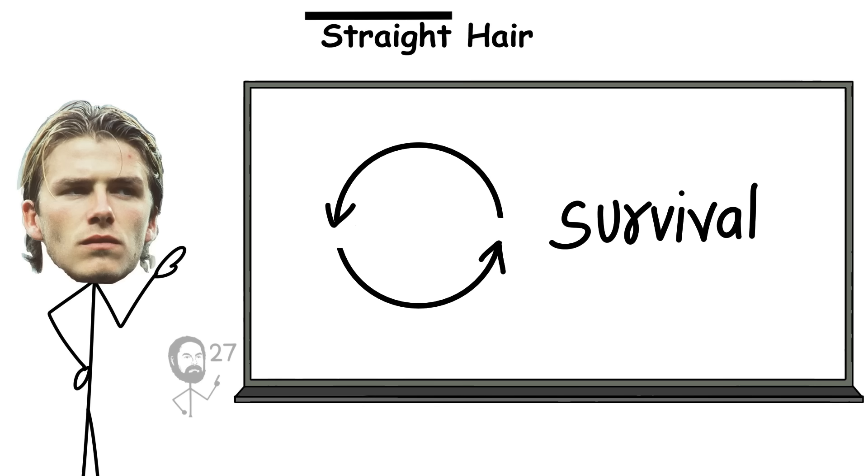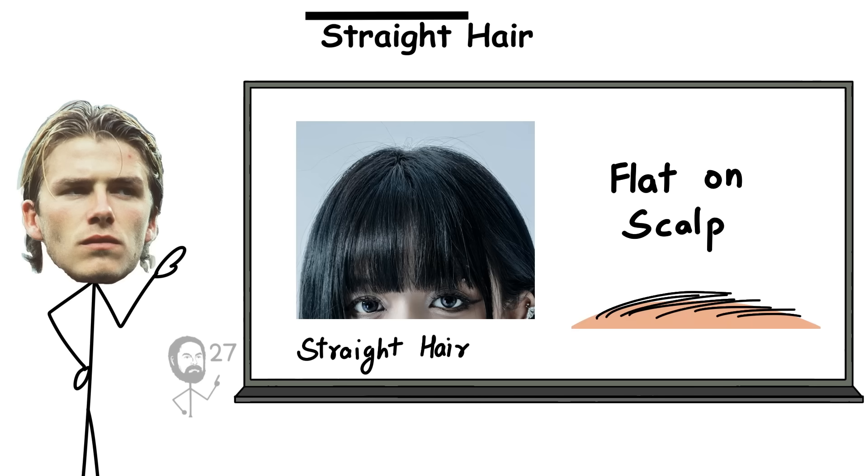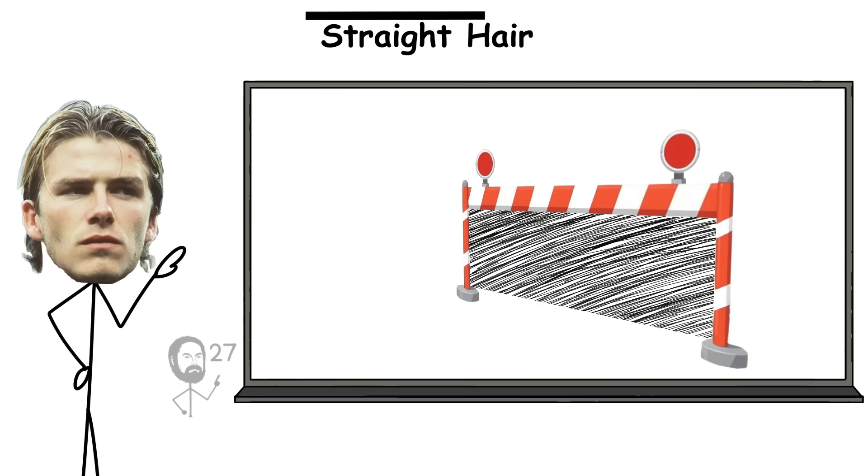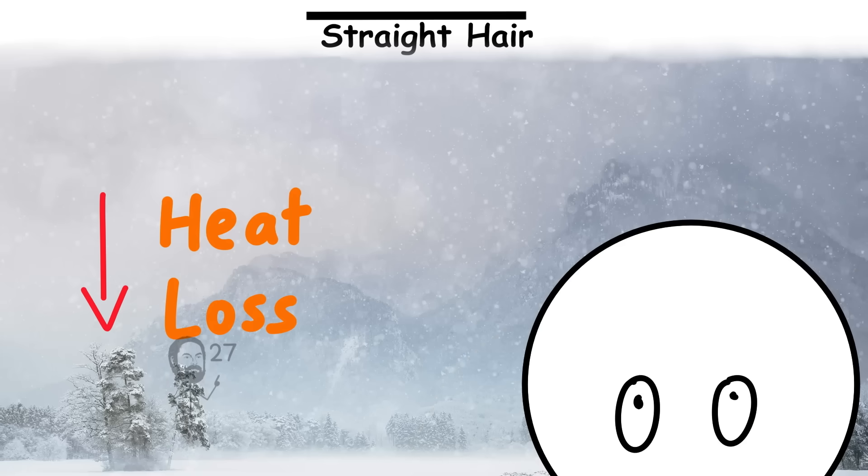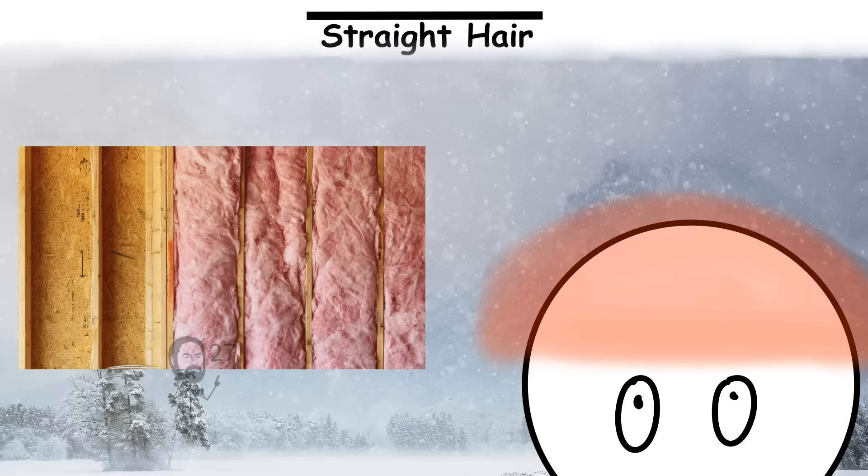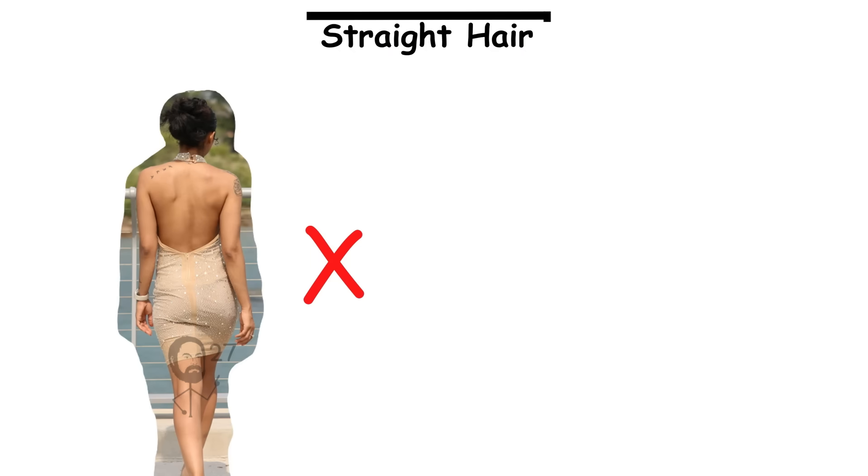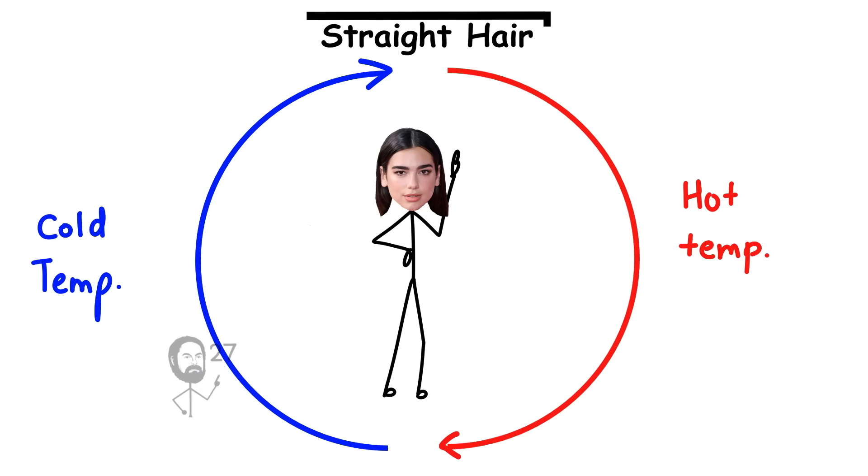This change offered a clear survival benefit. Straight hair lies flatter against the scalp, creating a more compact barrier that helps retain heat. In cold climates, this structure helped reduce heat loss from the head, acting almost like insulation. It's not sleek for fashion, it's sleek for thermoregulation.